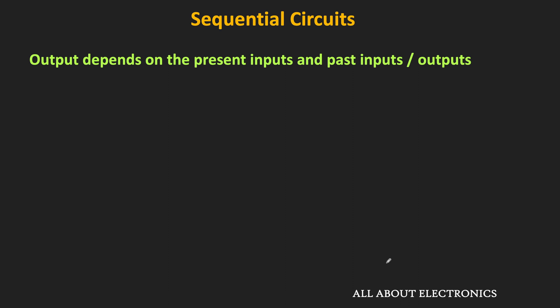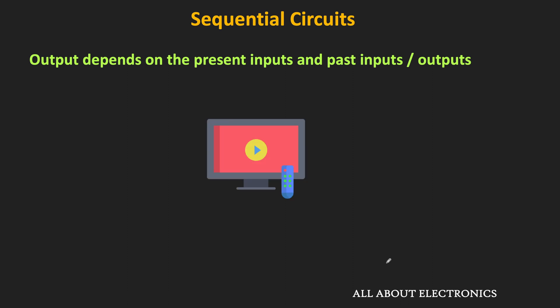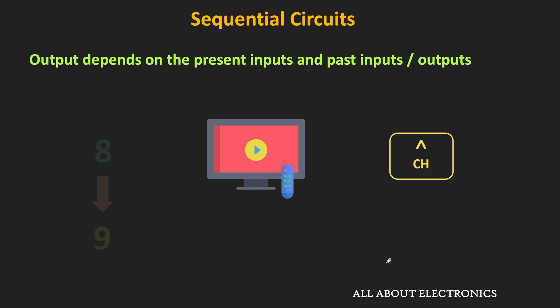To understand this, let's take a simple example. Suppose we have a television and want to change the channel using a remote. As soon as we press the channel-up button, the channel increments by 1. For example, if the current channel is 8, after pressing the button the next channel will be 9. Likewise, if the current channel is 15, the next channel will be 16.